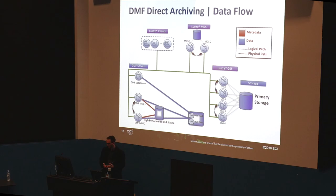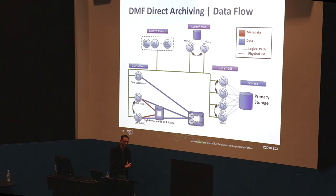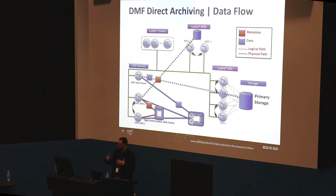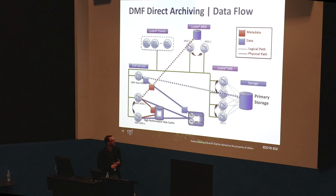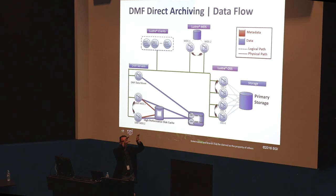For direct archiving: the high-performance disk cache within our DMF environment is used purely for managing DMF inodes, the DMF database, and other administrative file systems. Logically, metadata updates go directly into the DMF inodes and database, whilst all data blocks go directly down to the lower tiers — directly to tape or a disk-based storage tier — resulting in a true HSM environment and an optimized data path from Lustre to your lower-cost tiers of storage.